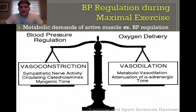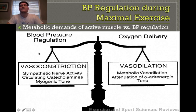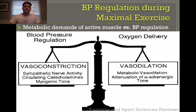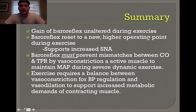Once we hit that maximum point, cardiac output is at its limit and the inactive regions are already nearly completely vasoconstricted, so the body has no other choice but to begin vasoconstricting active skeletal muscle. That's why VO2 max comes to an end — you can work at 100% intensity for only a very limited time. Eventually the body cannot sustain that maximal intensity because it's constantly balancing blood pressure regulation against the maximum oxygen delivery it can achieve.